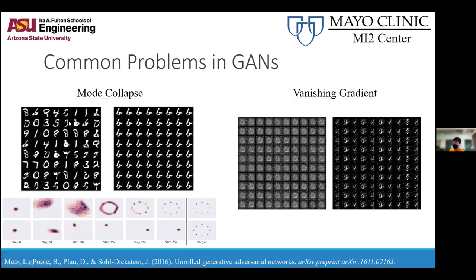Mode collapse: you can start from random noise, it learns some things and generates something realistic enough, but then doesn't explore further. On the top is ideal GAN training — starting from a random latent space, exploring samples, and near the end of training slowly dialing down where samples are, eventually generating at each of the real data points. Mode collapse is where the generator gets stuck in a local minimum and only generates one point, like just drawing ones from MNIST.